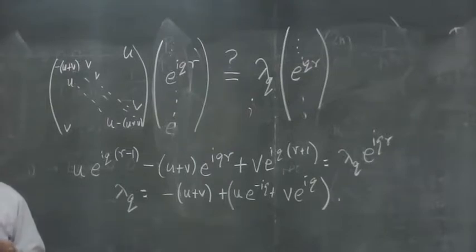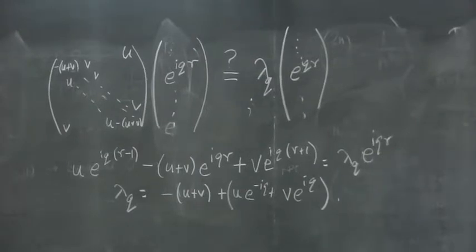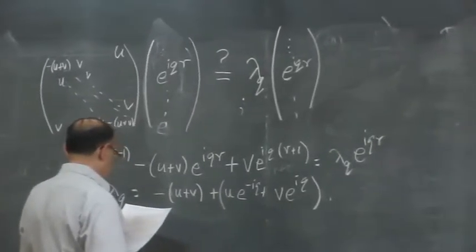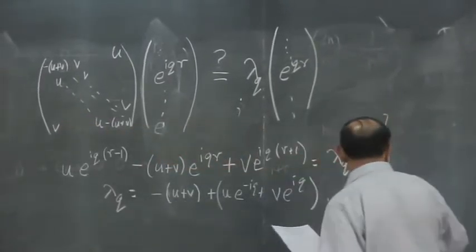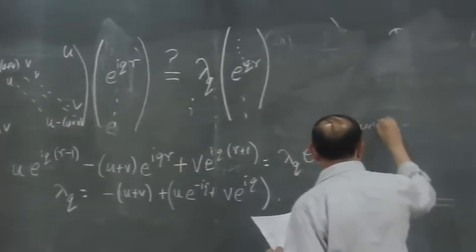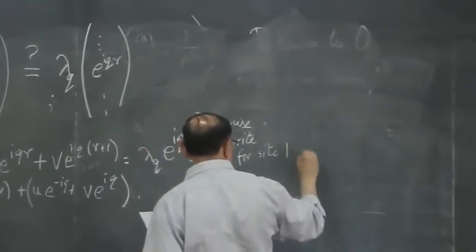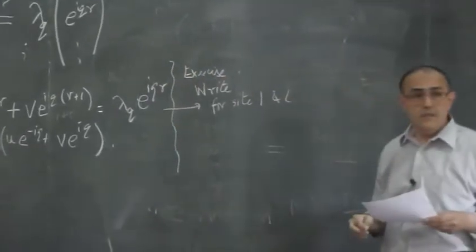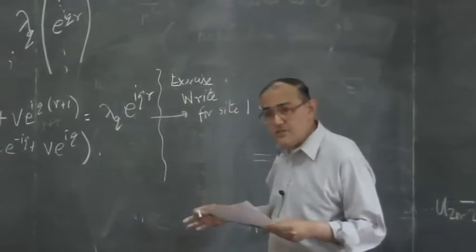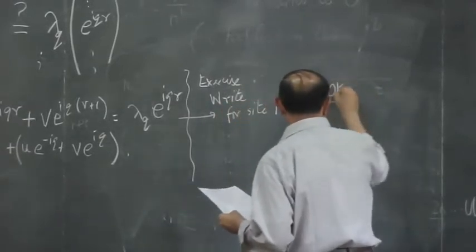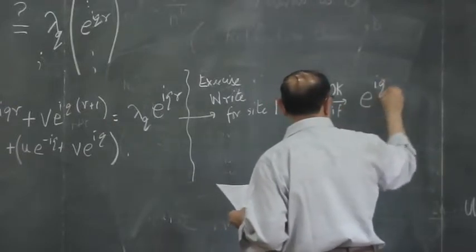Of course, we have not said what q is. As of now, q could be anything. The only site for which this does not work automatically is actually the last site, because the right neighbor of the last site is site 1. So, you write the equation for that last site. I will leave that as a small exercise. Write the analogous equation involving site 1 and L. And you will find that is actually satisfied provided q is fixed to be something. And the answer is, e^(iqL) equals 1.